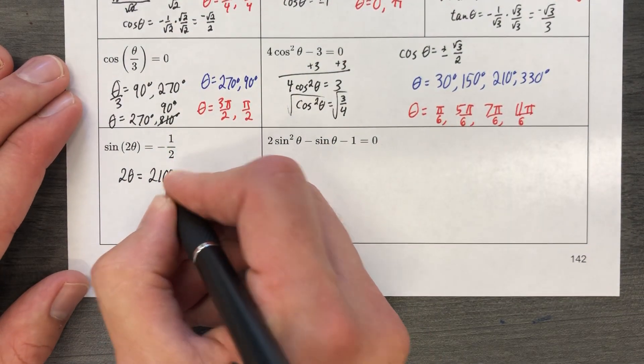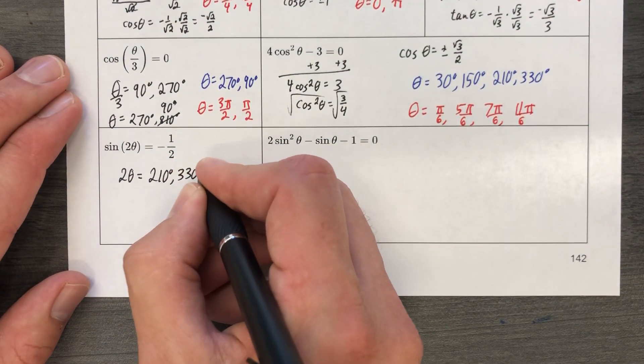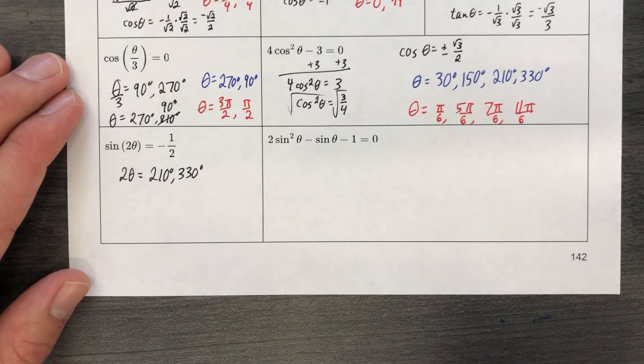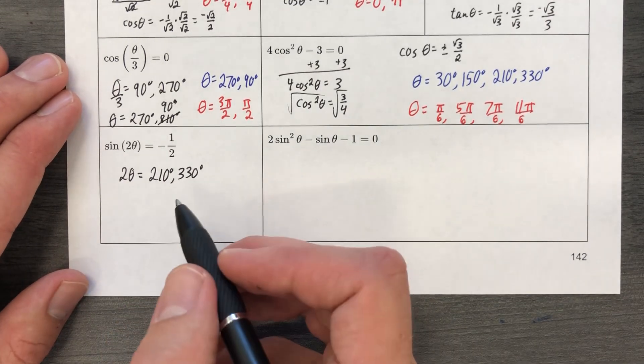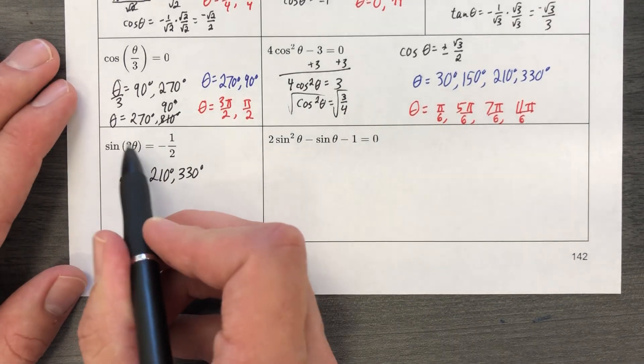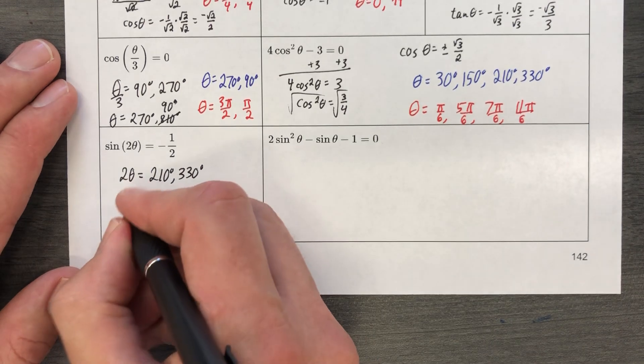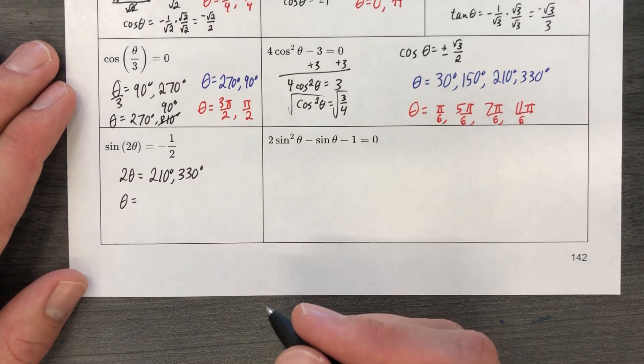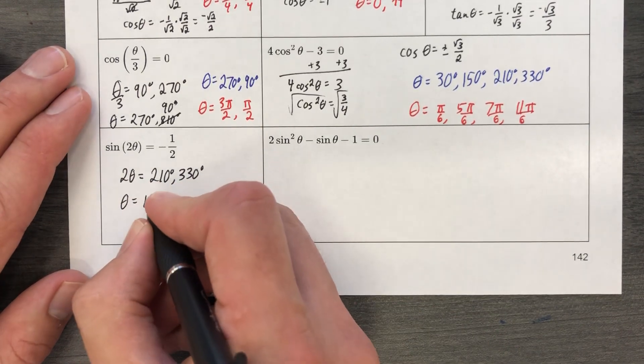210, 330. This is going to get fun. Check it out. 210 and 330, well, that's equal to 2 theta. So now we're going to divide by 2 and 210 divided by 2 is 105.